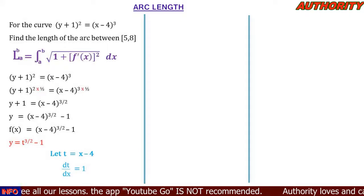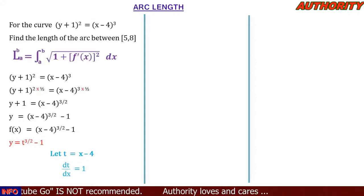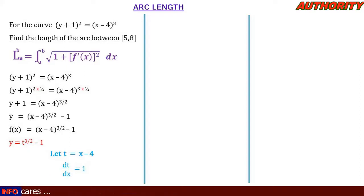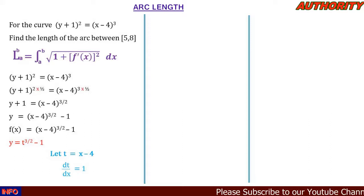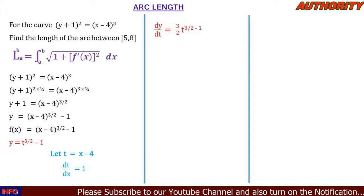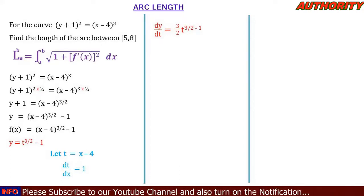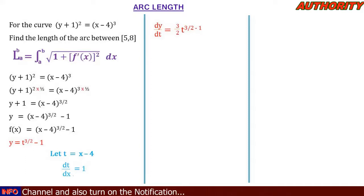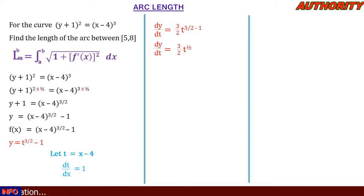Since we let t = x - 4, we rewrite y = t^(3/2) - 1. Now we differentiate y with respect to t: dy/dt = (3/2) t^(3/2 - 1) = (3/2) t^(1/2), since 3/2 - 1 = 1/2.